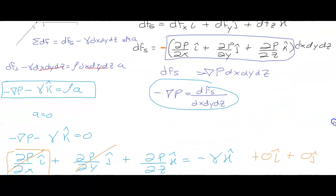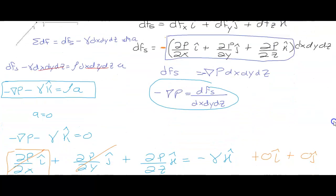So we arrive at p equals rho·g·z plus p₀. This is the equation we use for analyzing manometers and other hydrostatic problems. I had been using this equation for years, and starting this subject helped me understand where it comes from. I hope you enjoyed — thanks for being here.